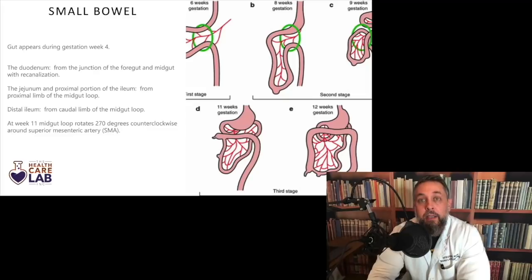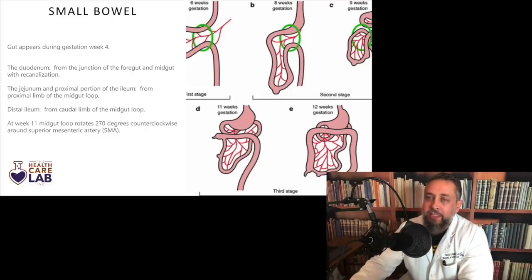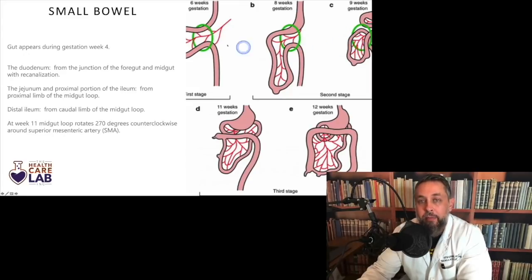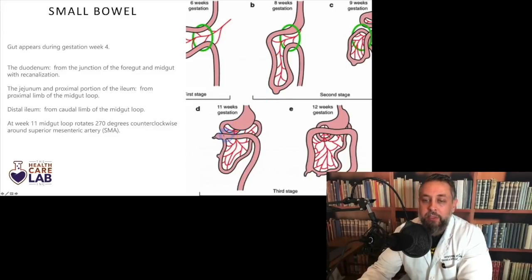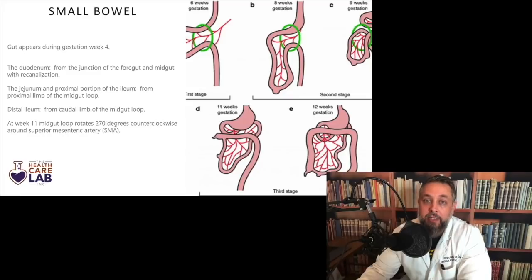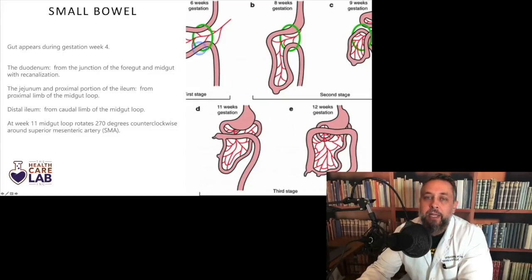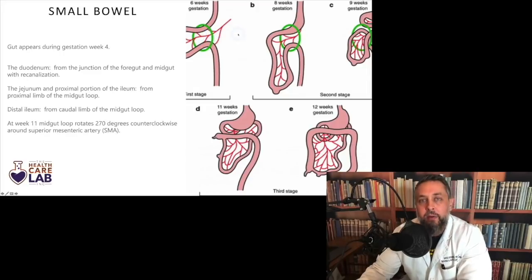Let's talk about the embryology of the small bowel. The gut appears during gestation at week four. The ring around the gut shows the gut's position relative to the abdomen at these times. The gut herniates out of the abdomen — in week six it's outside and actually twists and folds on itself. This portion eventually becomes the cecum and ends up in its position, except when it returns to the abdomen after a non-rotation, partial rotation, or mal-rotation. We'll talk more about it during the pediatrics lecture.